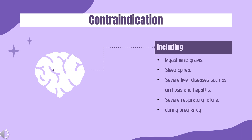Contraindications. Clobasam should be used with great care in patients with the following disorders: myasthenia gravis, sleep apnea, severe liver diseases such as cirrhosis and hepatitis, and severe respiratory failure. Benzodiazepines require special precaution if used in the elderly, during pregnancy, in children, alcohol or drug-dependent individuals, and individuals with comorbid psychiatric disorders.